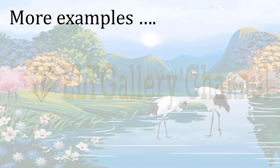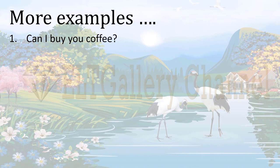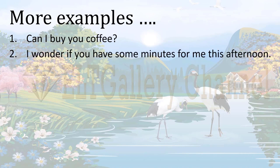Now let's have more examples with the two kinds of roles and the two kinds of commodity. 'Can I buy you coffee?' — the role here is giving; the addresser wants to give coffee. This is an offer. 'I wonder if you have some minutes for me this afternoon' — on the surface it looks like asking for a piece of information, but here the addresser demands a service: he wants to meet the person and wonders if the audience can spare some time for him.